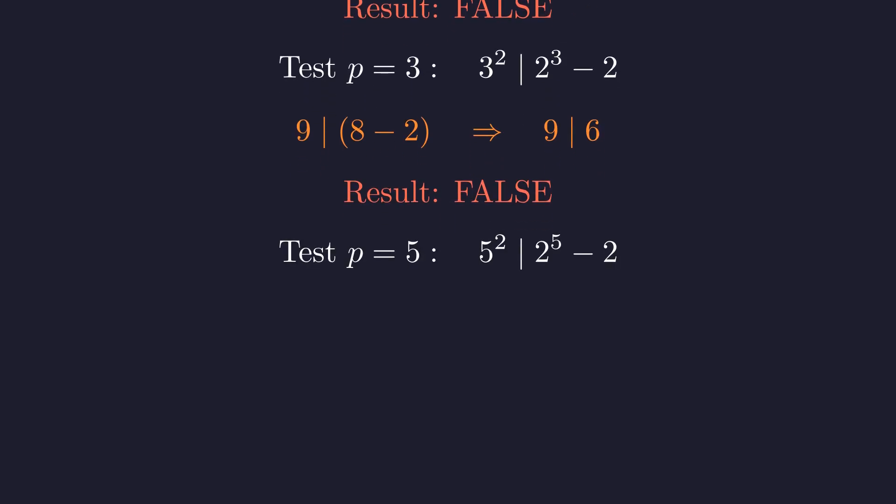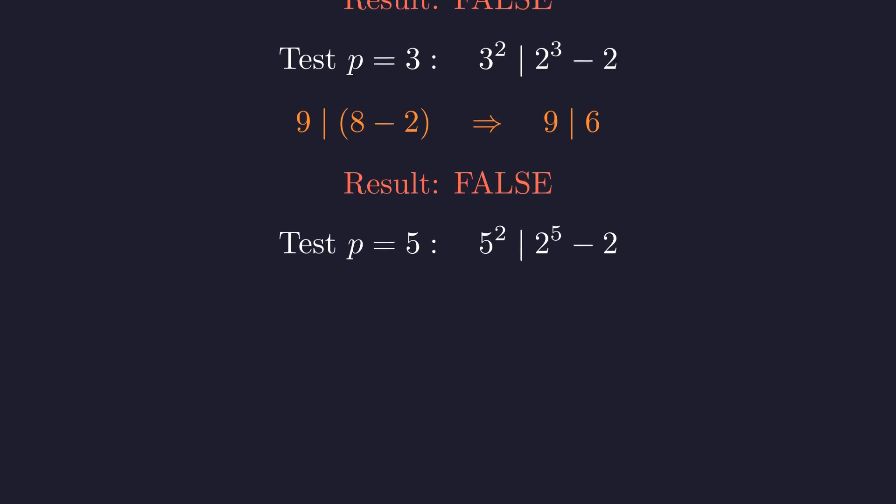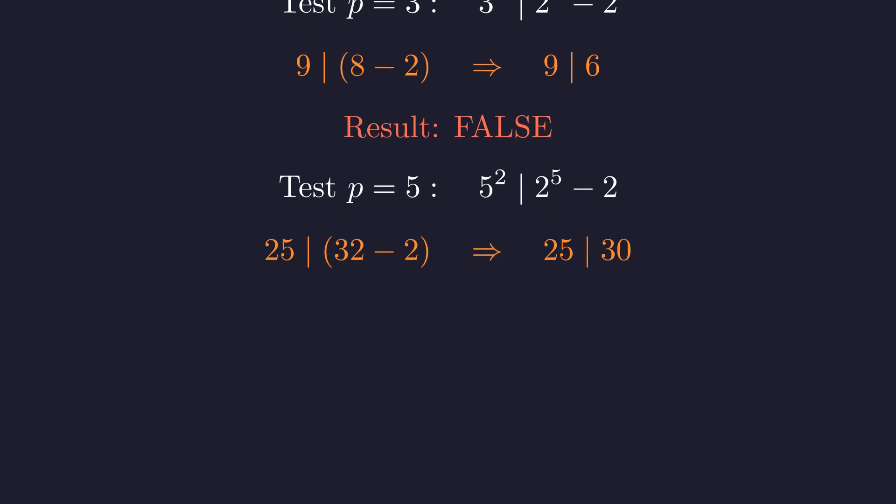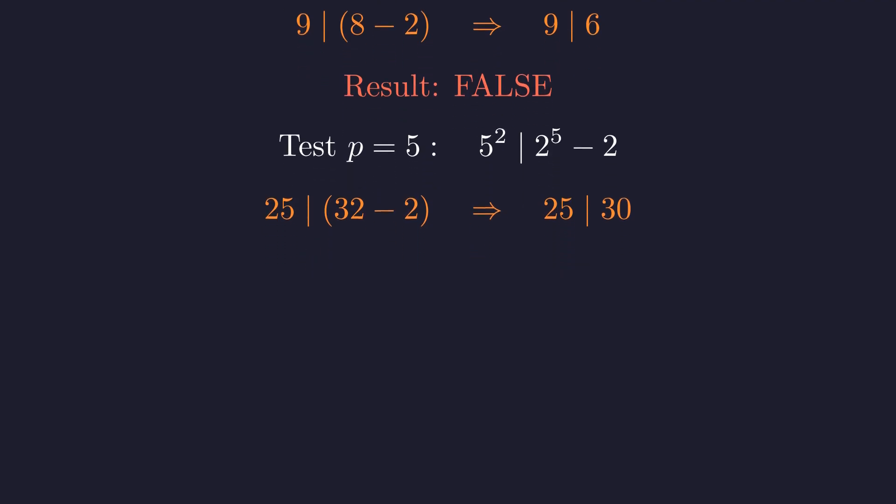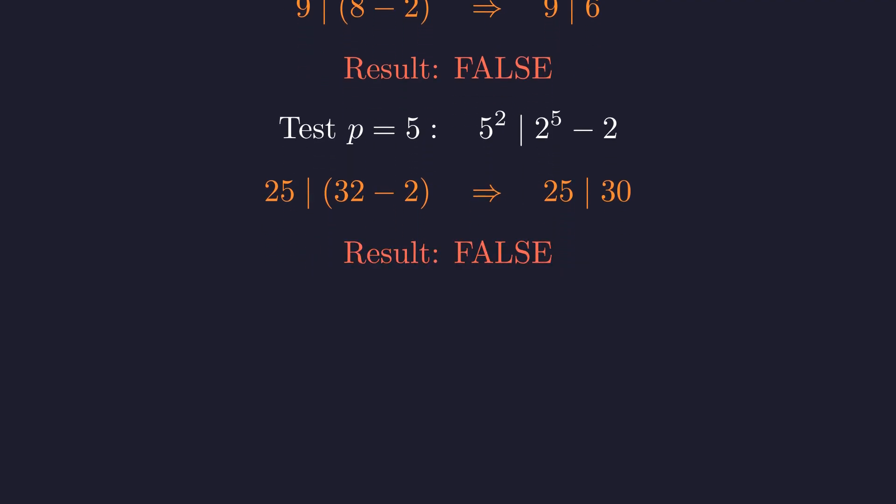For p equals 5, we need 25 to divide 2 to the 5th minus 2. 2 to the 5th is 32, so we're checking whether 25 divides 32 minus 2, which is 30. 25 does not divide 30. The pattern is clear. These special primes are incredibly rare.